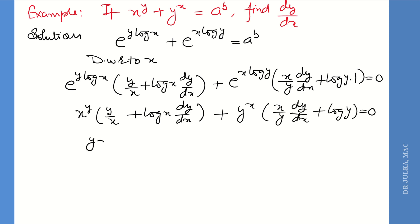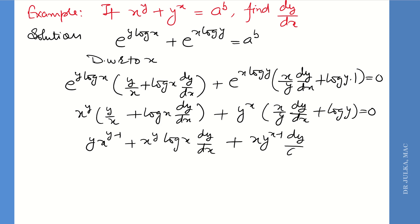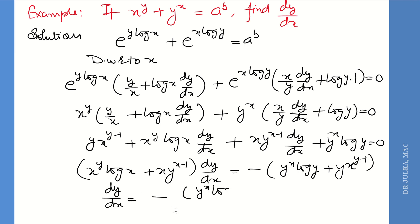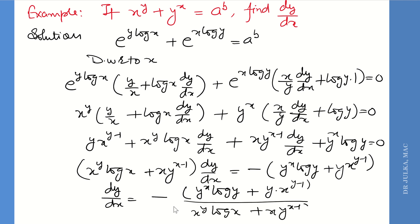After simplification, we get: (y · x^(y−1) + x^y · log x) · dy/dx + (x · y^(x−1)) · dy/dx + y^x · log y = 0. Taking dy/dx common, the answer is: dy/dx = −(y^x · log y + y · x^(y−1)) / (x^y · log x + x · y^(x−1)). This is the answer.